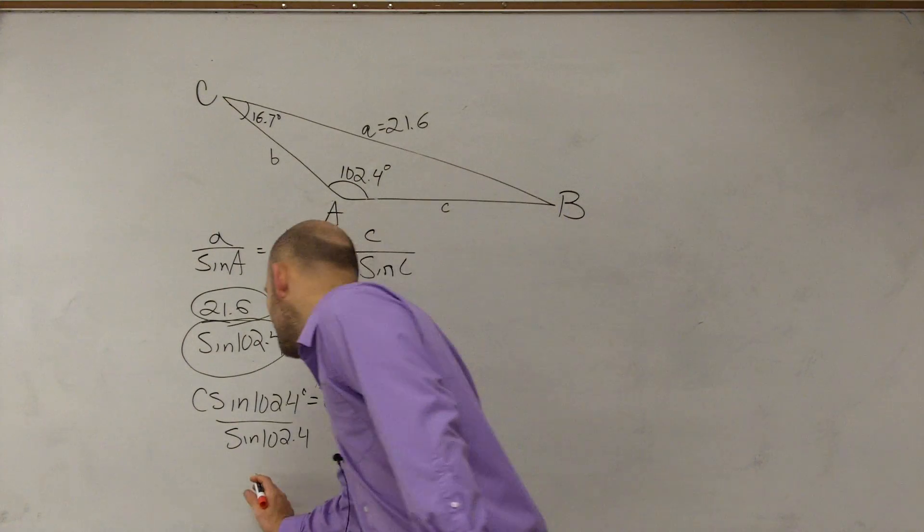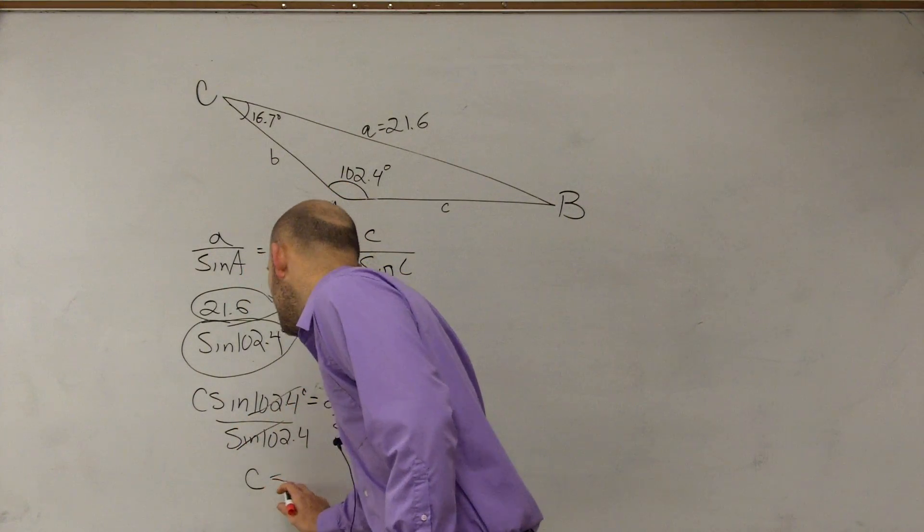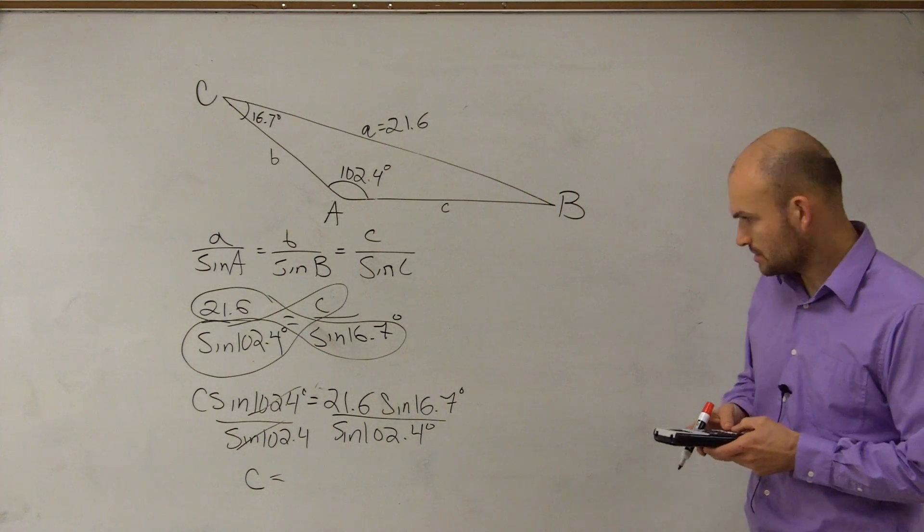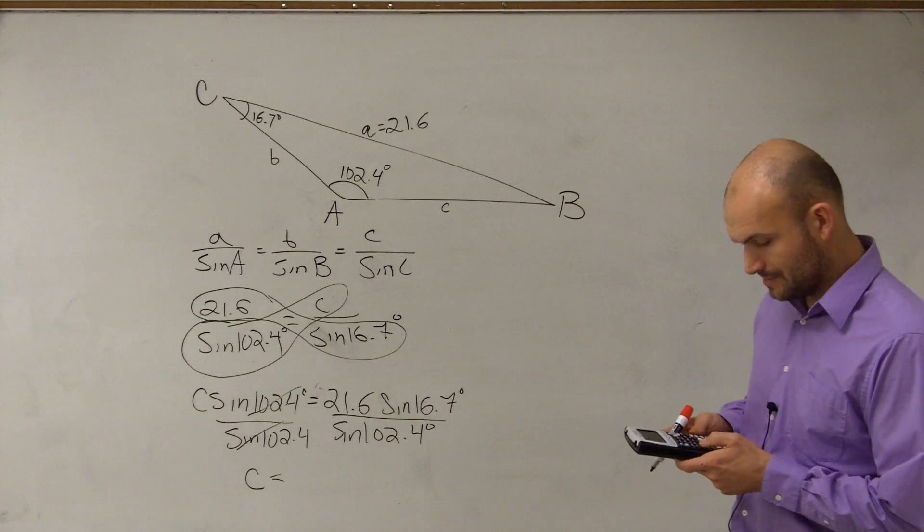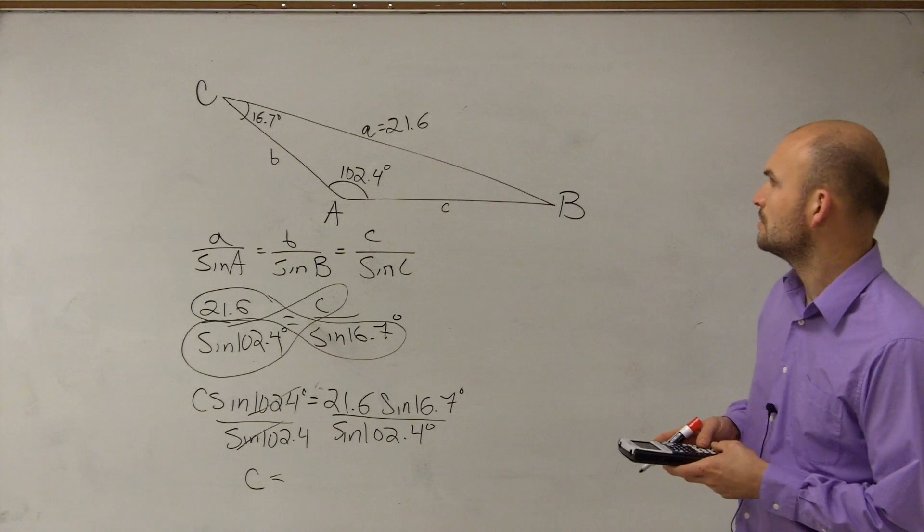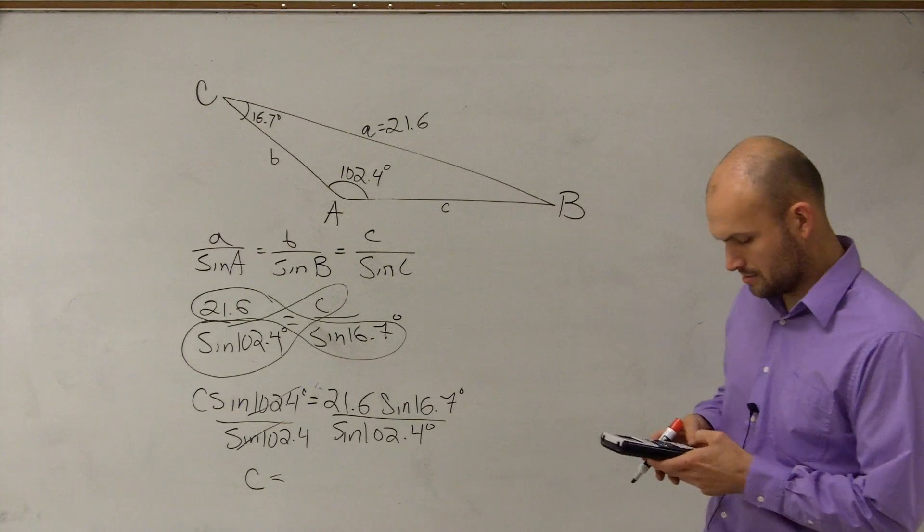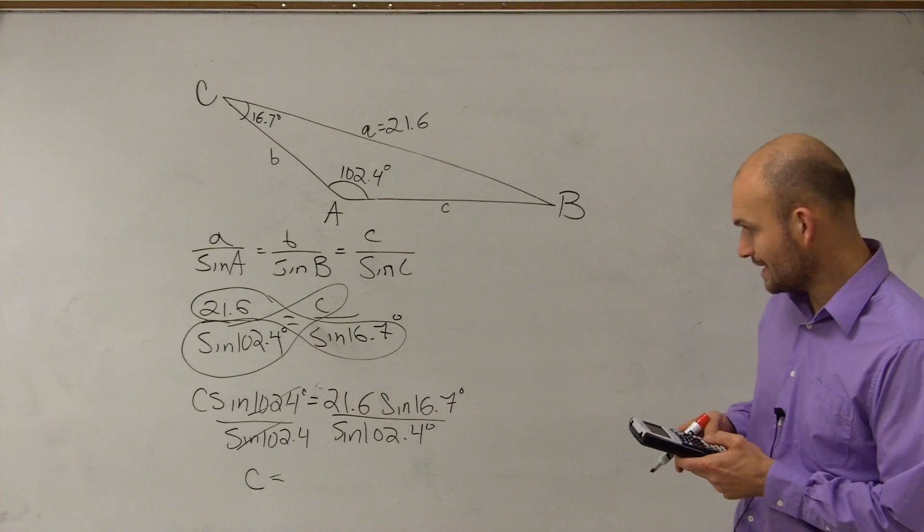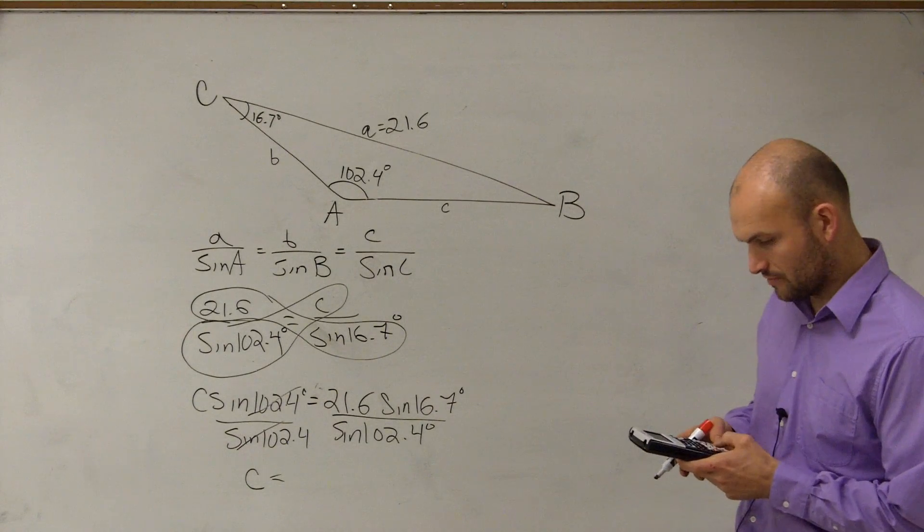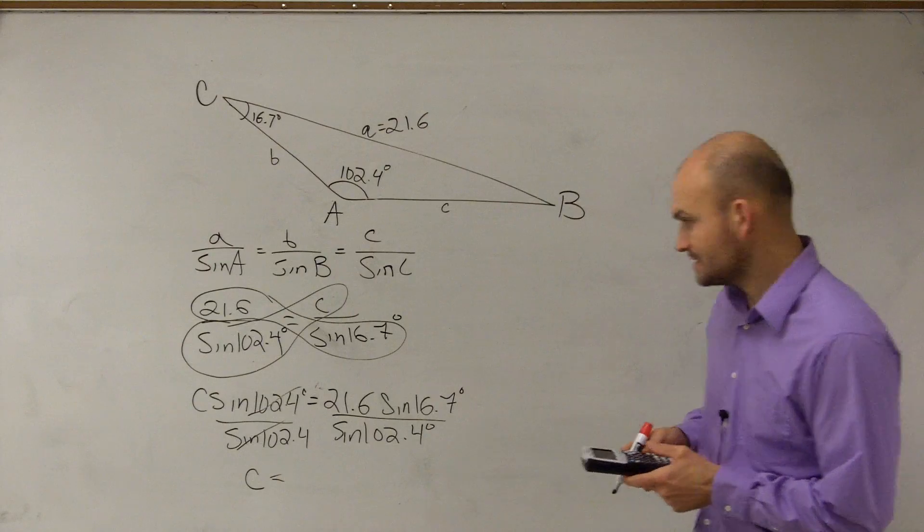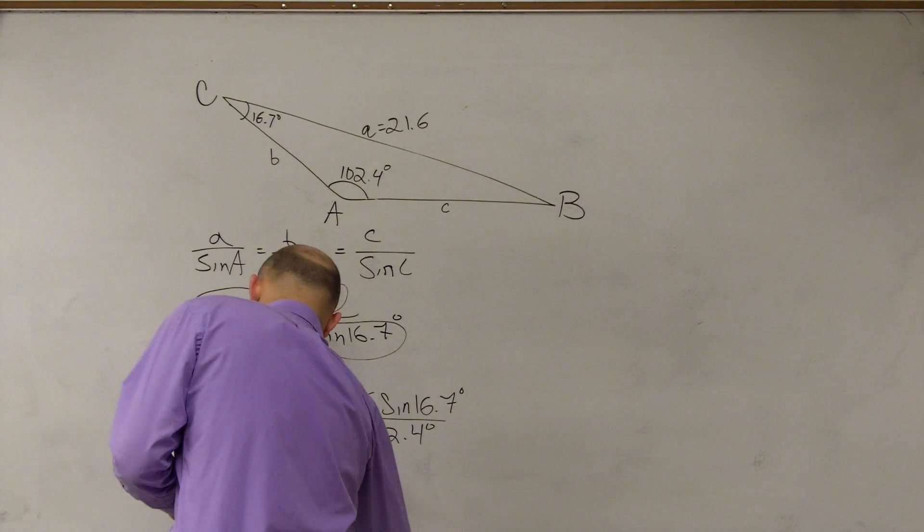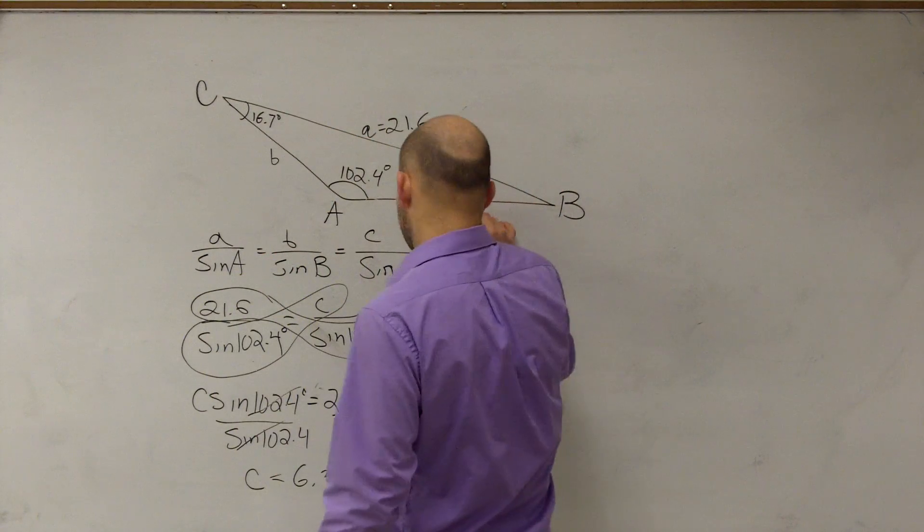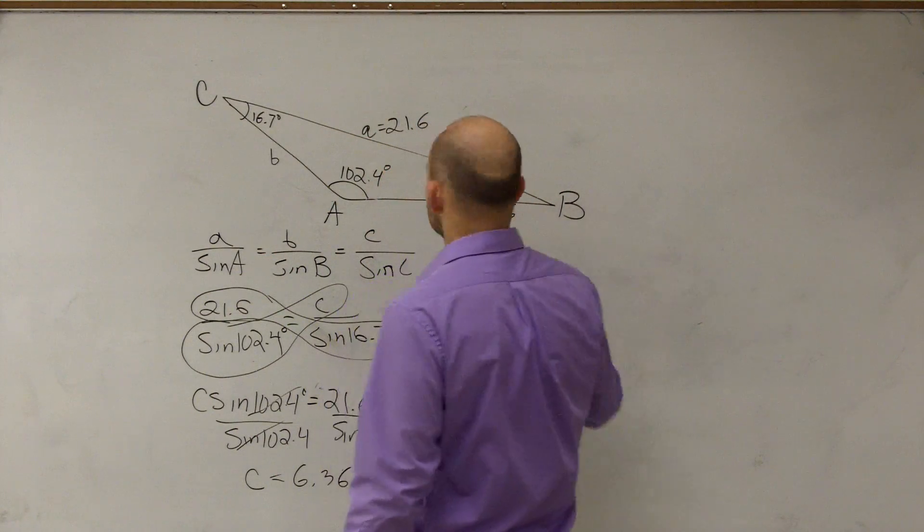So then we say C, as those divided to one, equals—so I just take 21.6 times the sine of 16.7, then I divide that by the sine of 102.4. And I get C equals 6.36, as I round. So I could say C equals 6.36, rounded.